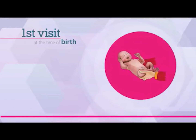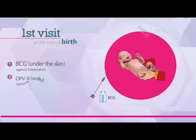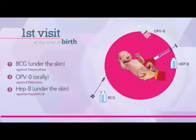The first visit is scheduled at the time of the baby's birth. On this visit, the child is administered BCG vaccine under the skin in the right upper arm for protection against tuberculosis, OPV0 vaccine is given orally to protect against polio, and Hep B vaccine is administered in the left thigh to protect against hepatitis B.